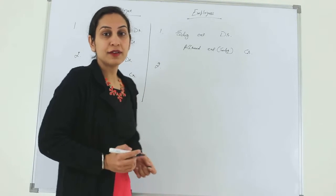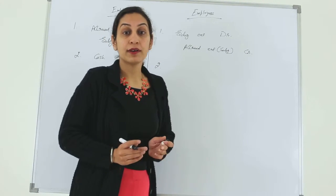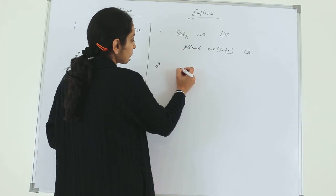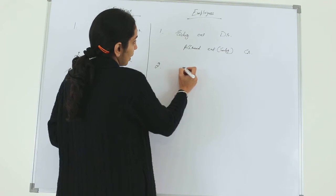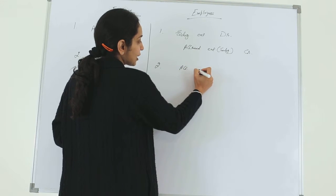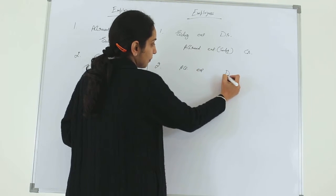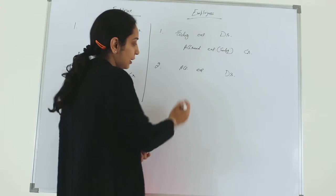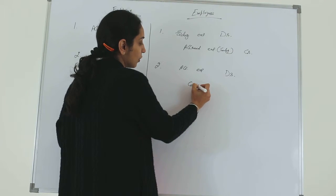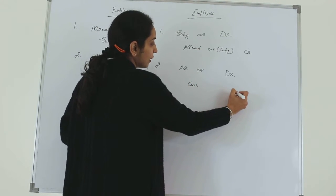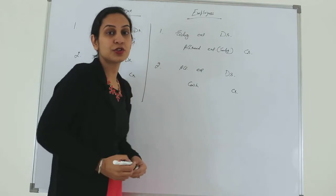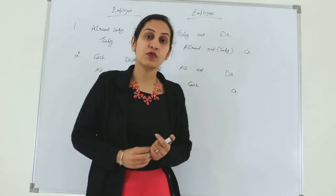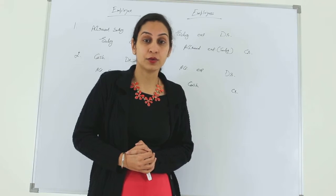What will be the entry when your employer makes the payment of salary? This time the accrued expense will be debited because we are releasing our current liability, and the cash account will be credited because cash is going out for the employer. This is how we make journal entries for accruals.